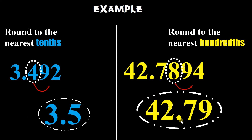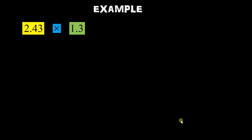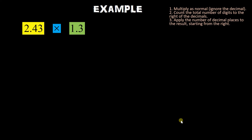Process naman tayo on how to multiply decimals. Madali lang, meron lang tayong tatlo. Step 1: multiply as normal or ignore the decimal — multiply lang natin na hindi natin pinapansin yung decimal. Step 2: count the total number of digits to the right of the decimal — bibilangin natin yun kung ilan. Step 3: apply the number of decimal places to the result starting from the right.